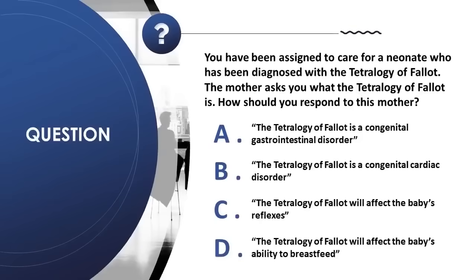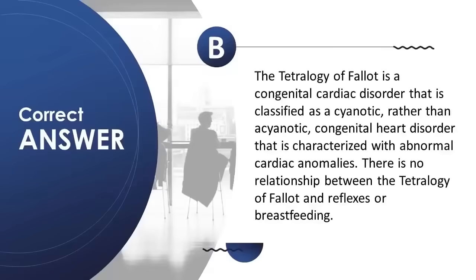Question 30: A neonate has been diagnosed with Tetralogy of Fallot. The mother asks what it is. How do you respond? A) congenital gastrointestinal disorder; B) congenital cardiac disorder; C) will affect the baby's reflexes; D) will affect the baby's ability to breastfeed. Correct answer is B. The Tetralogy of Fallot is a congenital cardiac disorder classified as a cyanotic congenital heart disorder characterized by abnormal cardiac anomalies. There is no relationship to reflexes or breastfeeding.